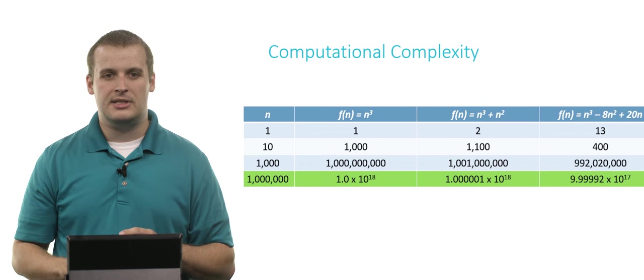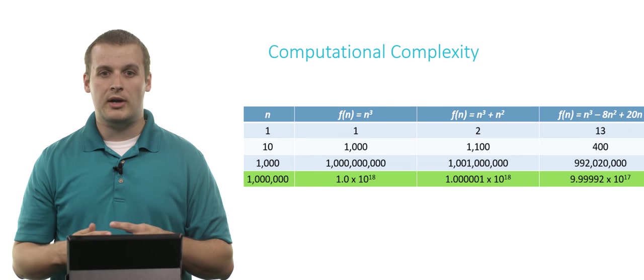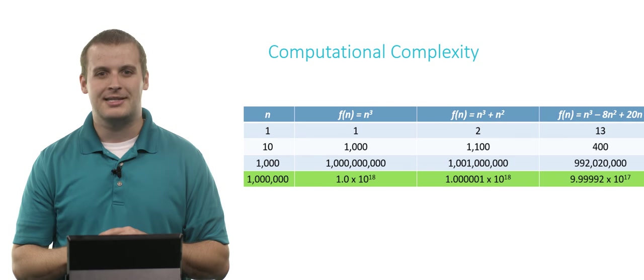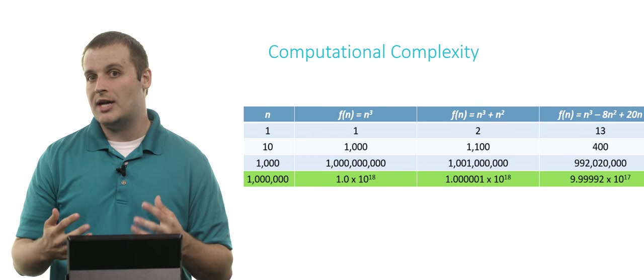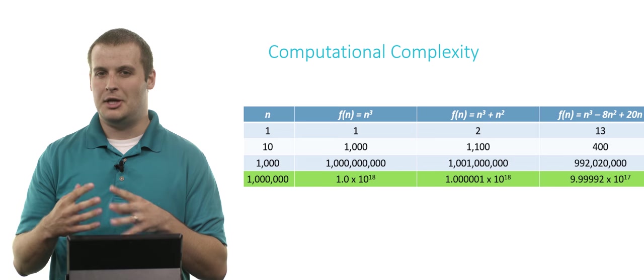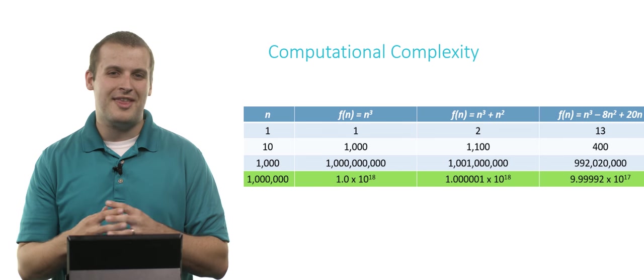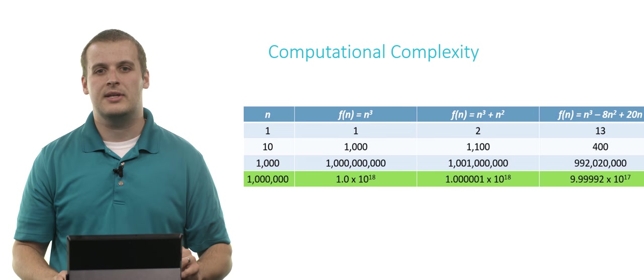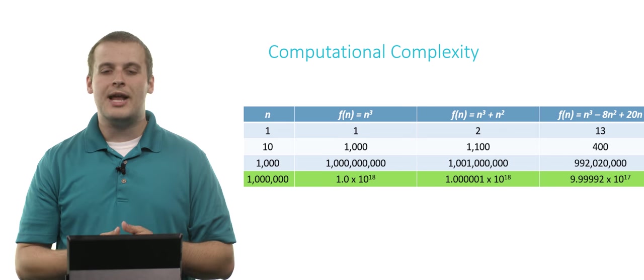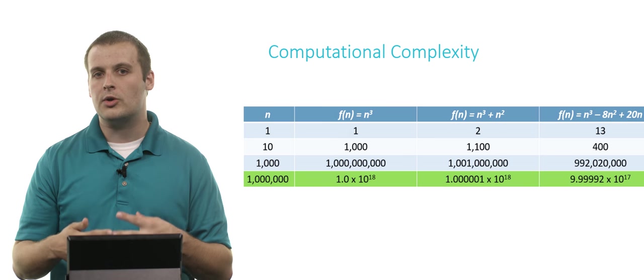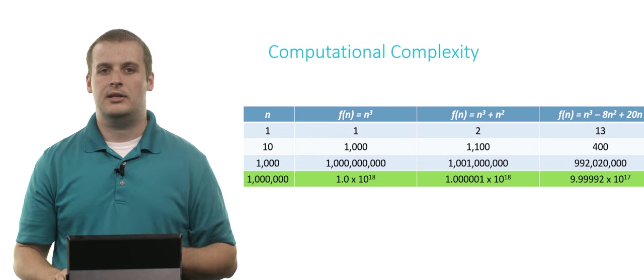And just to really hammer home the point, if the data input is of size a million, all three of these pretty much take one quintillion, if my math is correct, steps to process a data input of size a million. That's a lot of steps, and the fact that one of them might take a couple hundred thousand, or a couple hundred million even less, when we're talking about a number that big, it's kind of irrelevant. They all tend to take approximately n cubed, and so we would actually refer to all of these algorithms as being on the order of n cubed, or big O of n cubed.